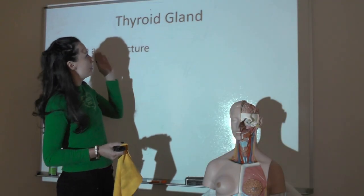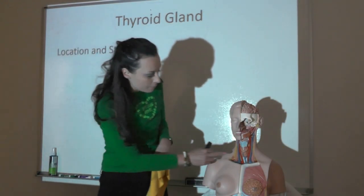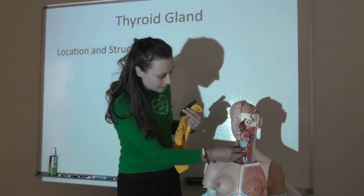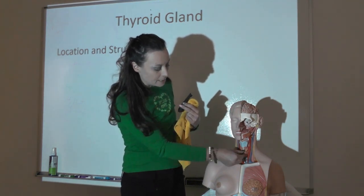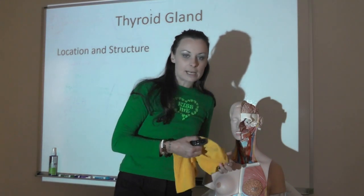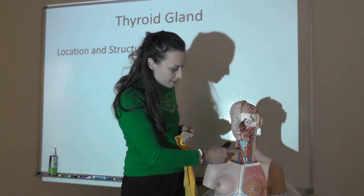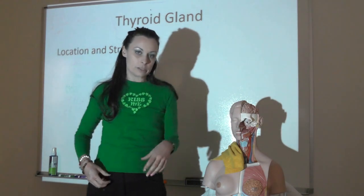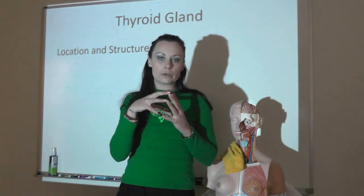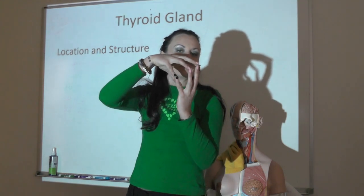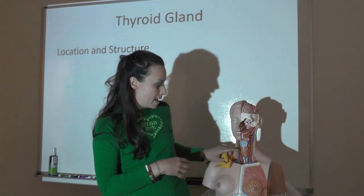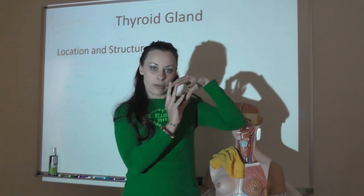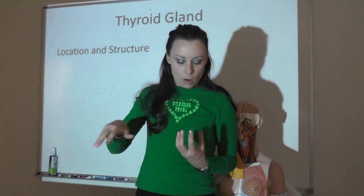The thyroid gland is a bilobed gland in the anterior compartment of the throat, sitting anterior to the trachea and connected by a small region called the isthmus. It's made of many thyroid follicles. A thyroid follicle is like an egg: you have the shell on the outside, and the contents in the middle. The thyroid is made of a large number of these follicles all sitting next to each other.